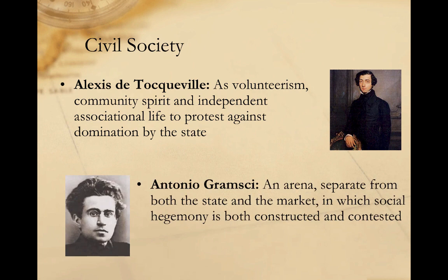The Marxist political theorist Antonio Gramsci, on the other hand, argued that civil society was the realm in which hegemony — those ideas taken as common sense — is both constructed and contested. Gramsci saw civil society primarily as a site of social or ideological struggle, as a space for challenging or defending existing hegemony.